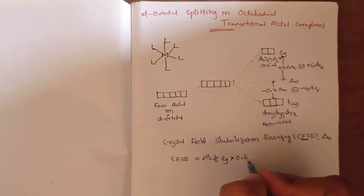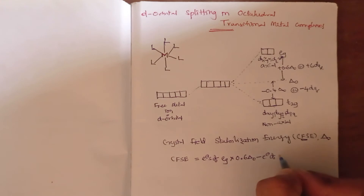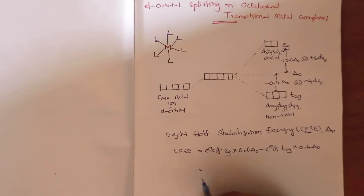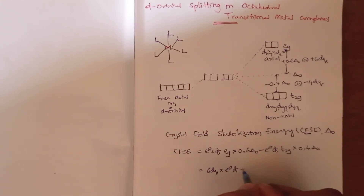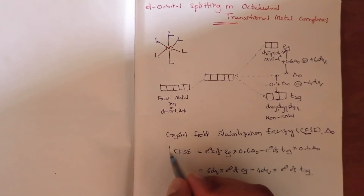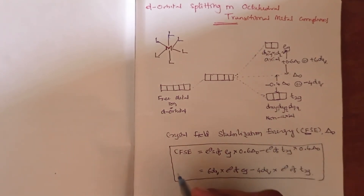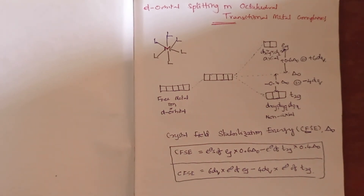The crystal field stabilization energy calculation formula is: CFSE = (electrons in eg × +0.6Δo) − (electrons in t2g × 0.4Δo), or equivalently, CFSE = (6Dq × electrons in eg) − (4Dq × electrons in t2g). This is the CFSE calculation formula for octahedral metal complexes.